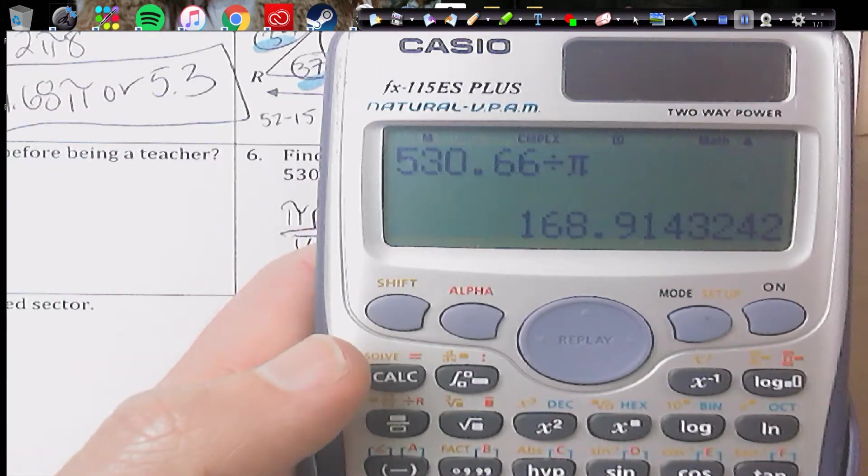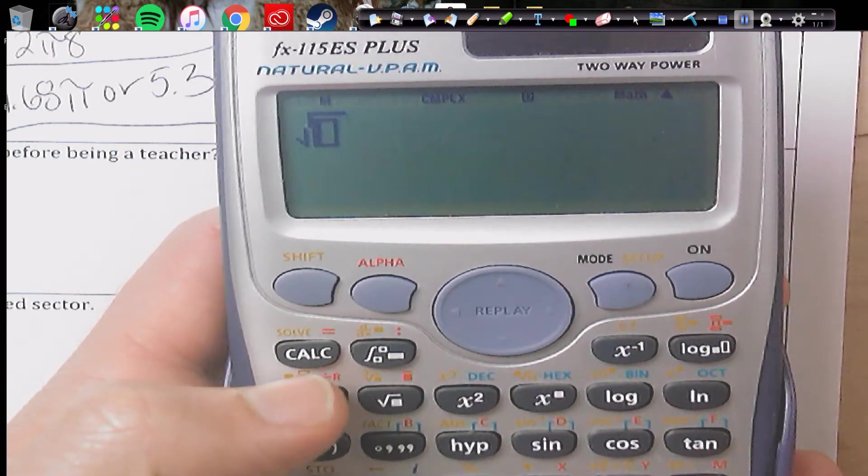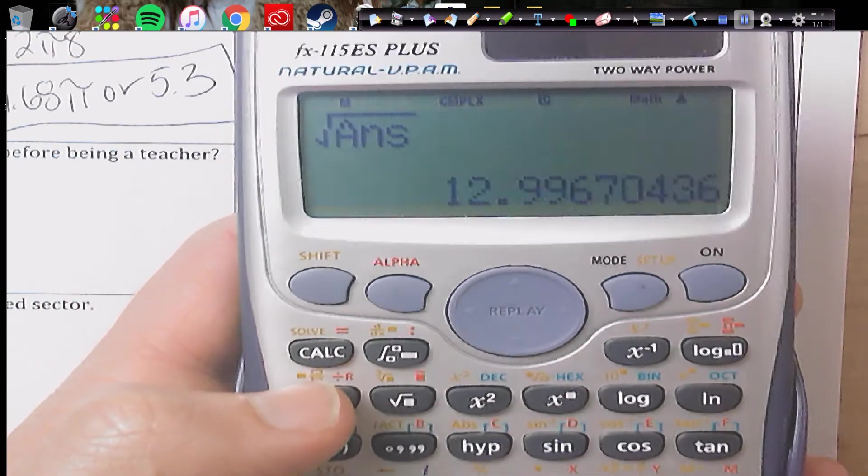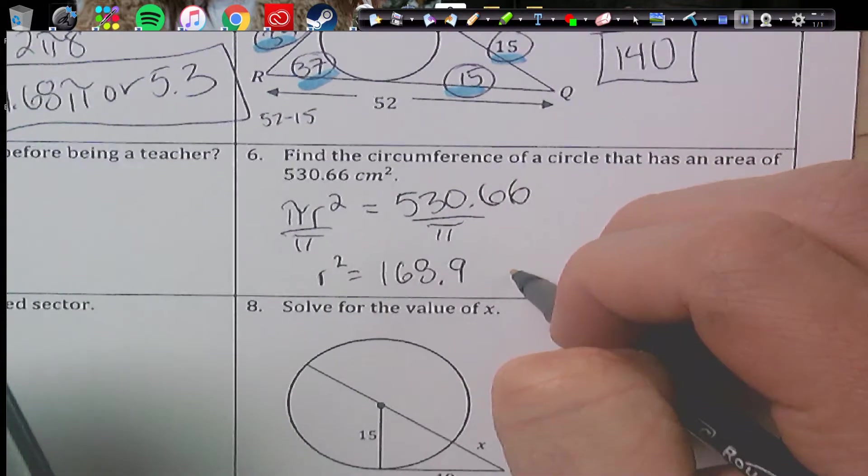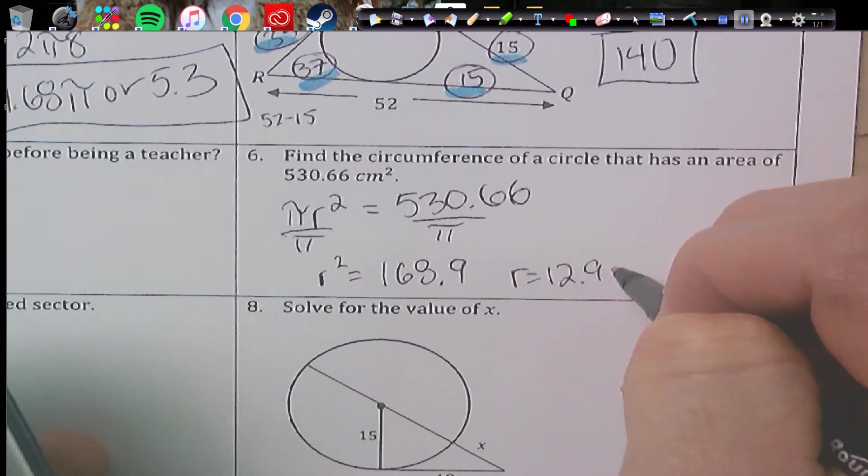R squared equals about 168.9. I'm leaving it in my calculator. Now I'm going to take the square root of that number, and I get 12.99. So R equals about 12.99.